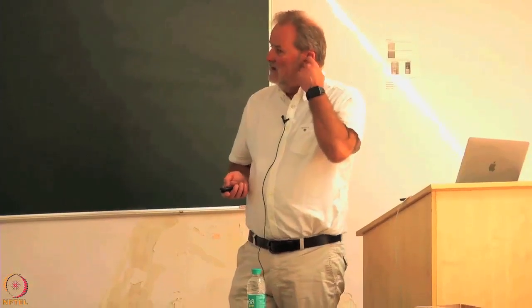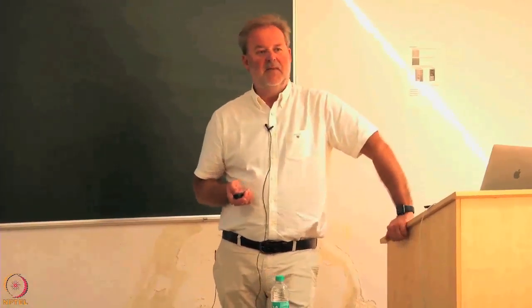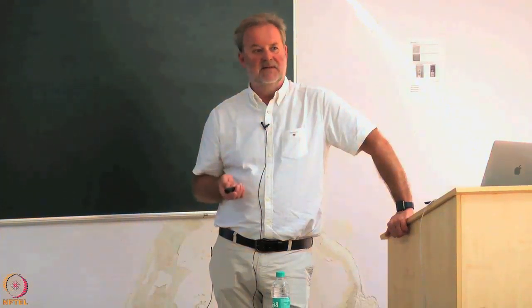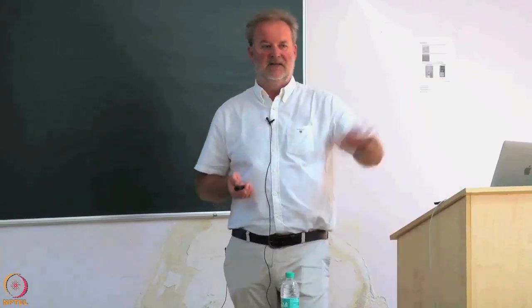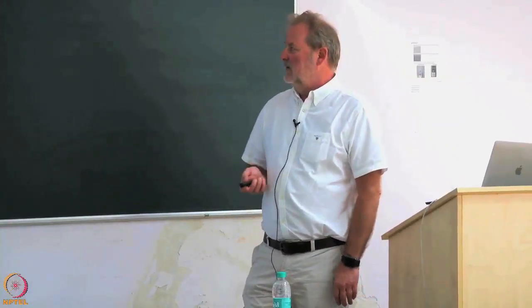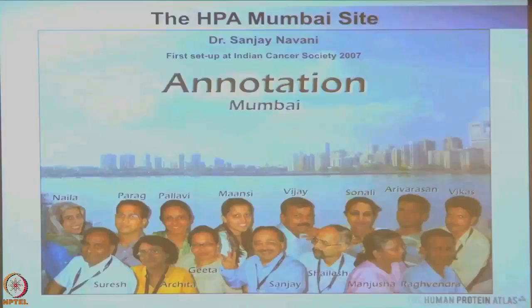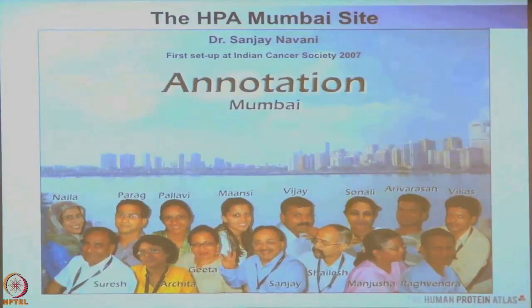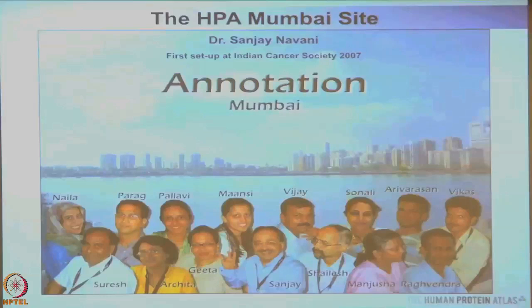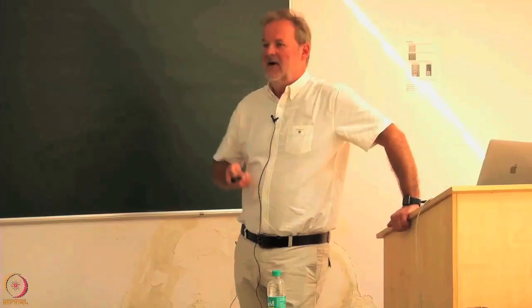We realized the scientific community would not be helped by just having immunohistochemistry images. The people who can interpret immunohistochemistry and evaluate tissues — whether this is a cancer cell or a normal cell, whether it is strongly or weakly expressed — are pathologists. Meeting with Dr. Navani and his team of pathologists in 2006, we set up the first site at the Indian Cancer Society in 2007, where these talented pathologists started looking at images, and we solved all the internet and IT structure challenges.